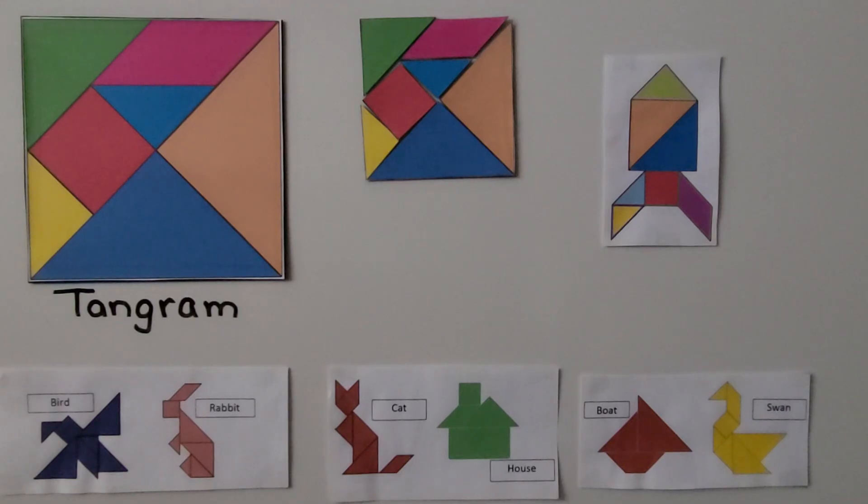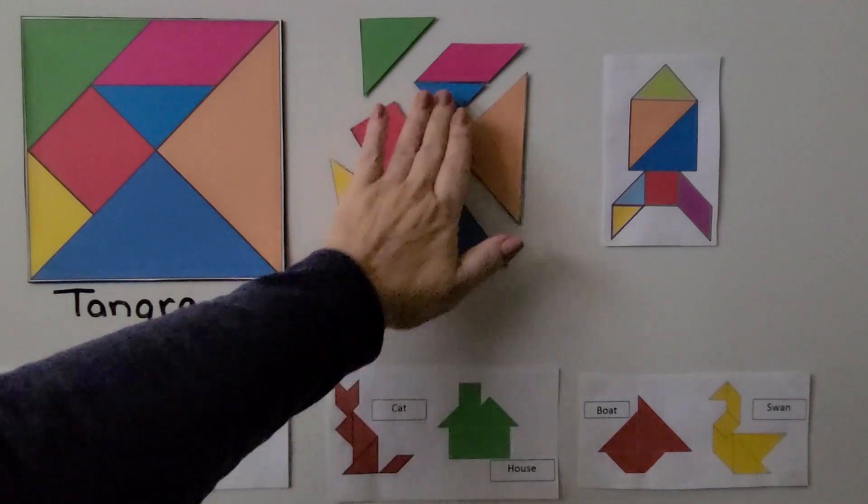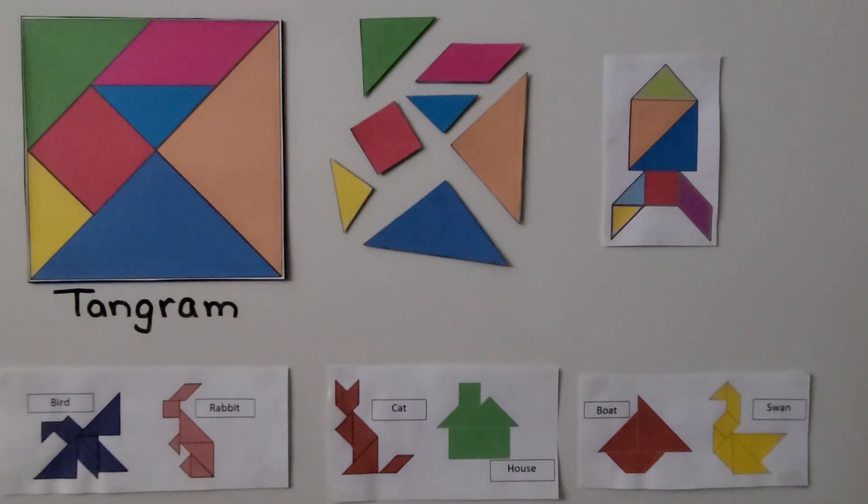A tangram is a seven piece puzzle in a square shape. And the seven pieces can be moved around and rearranged to make the shape of a bird, a rabbit, a cat, a house.